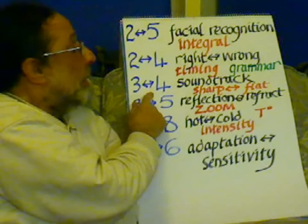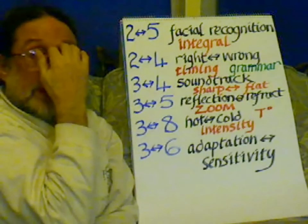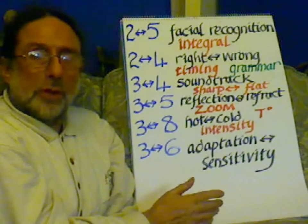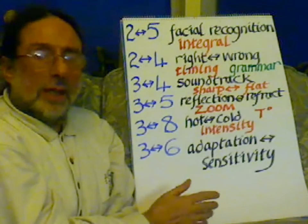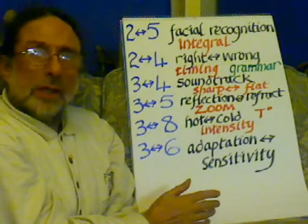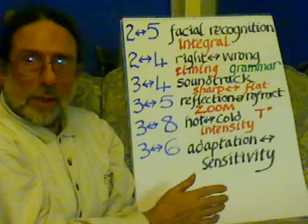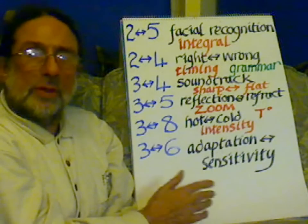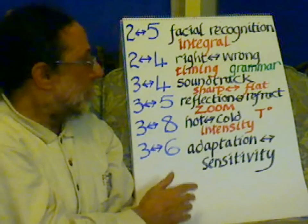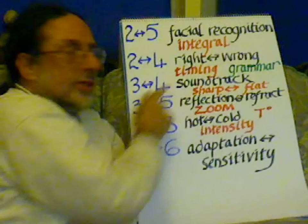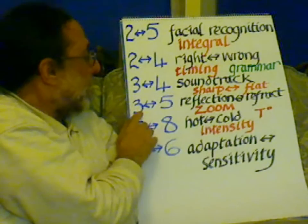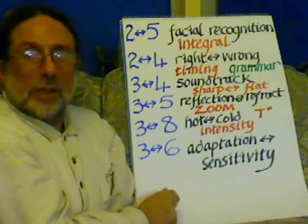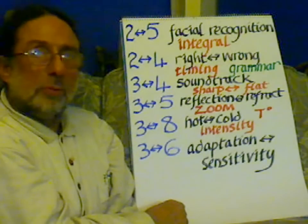From 3 to 4 is basically the soundtrack — several different polar opposites: hard and soft, early and late, sharp and flat. It's a soundtrack about, like steering, whether we're in the right place at the right time. Generally, we should understand there's a soundtrack. From 3 to 5 — space to the eye — is reflection or refraction, which as we understand it in a camera is a zoom function.